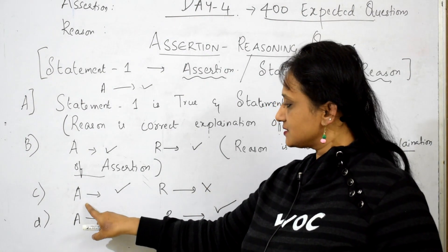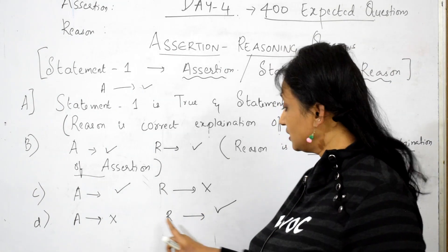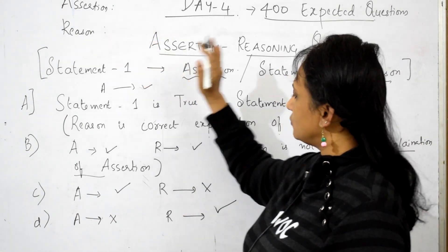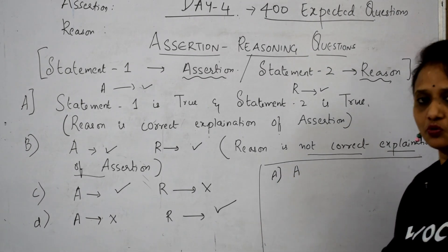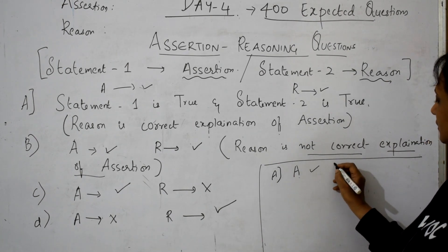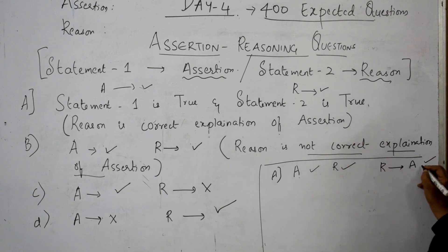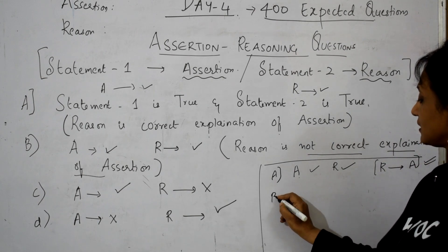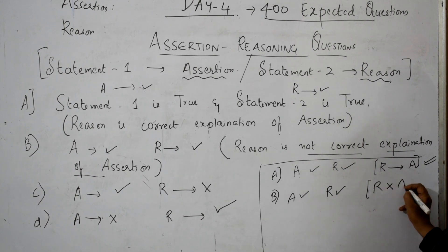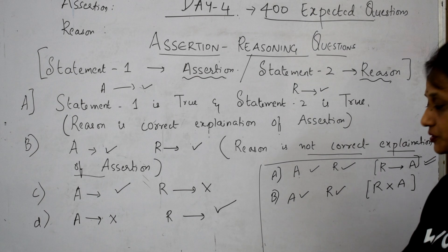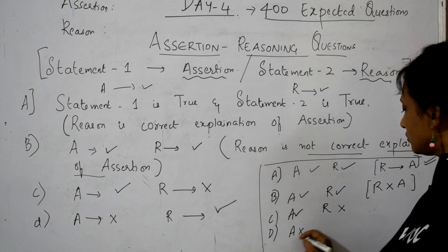Option C: assertion is right, reason is wrong. Option D: assertion is wrong, reason is right. So understood, students? Two statements, all four cases. Option A — assertion right, reason right, reason is the correct explanation of assertion. Option B — assertion right, reason right, but reason is not supporting the assertion. Option C — assertion right, reason wrong. Option D — assertion wrong, reason right. The options may change with the board, but the concept is this.